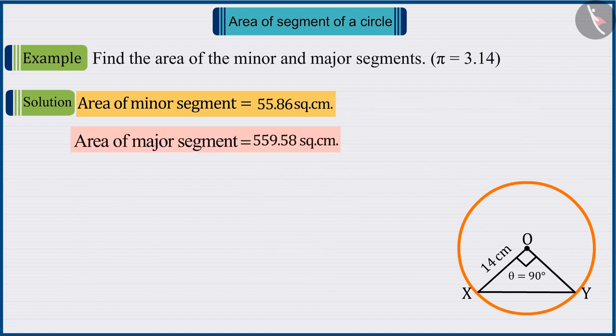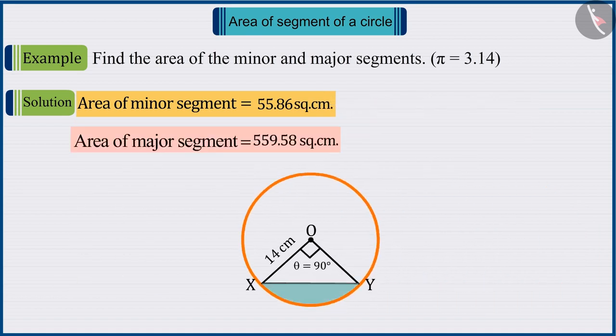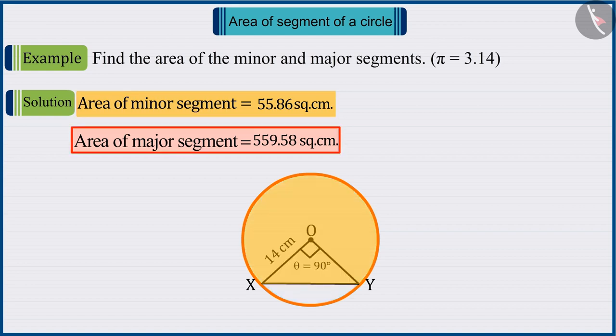So we can say that the area of the minor segment is 55.86 cm² and the major segment is 559.58 cm².